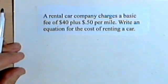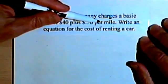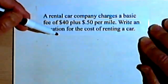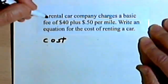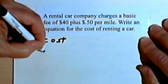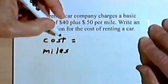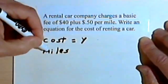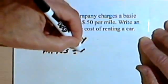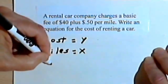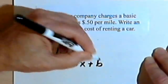So here's the first problem. A rental car company charges a basic fee of $40 plus 50 cents per mile. Write an equation for the cost of renting a car. So we want an equation for the cost, and the thing that's changing is going to be the number of miles. Since we're looking for the cost, let's make that y, and the number of miles driven, which is the independent variable, is going to be x. So we want to have our equation in y equals mx plus b form.